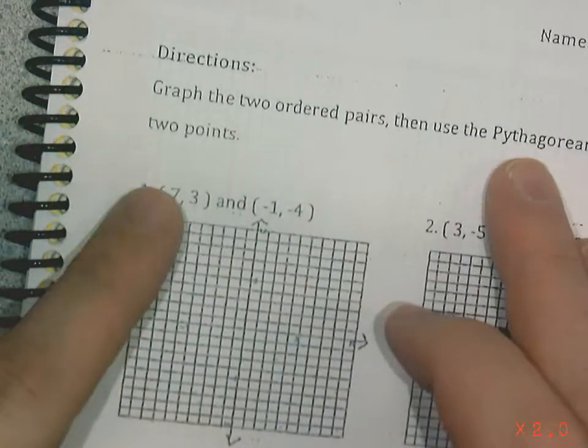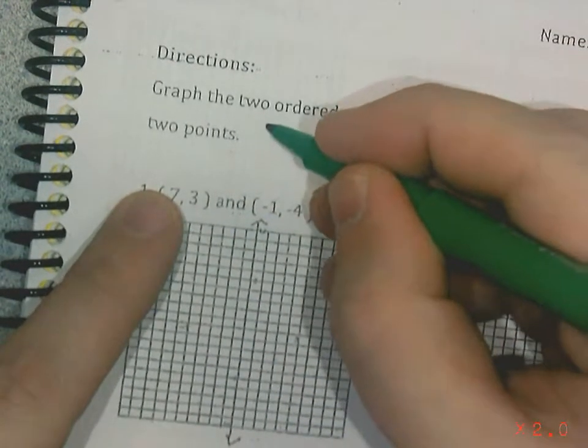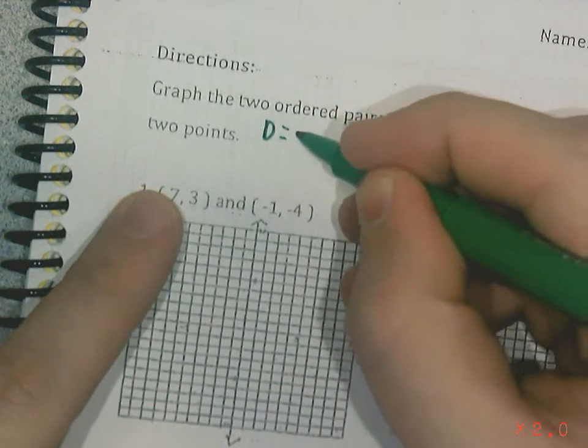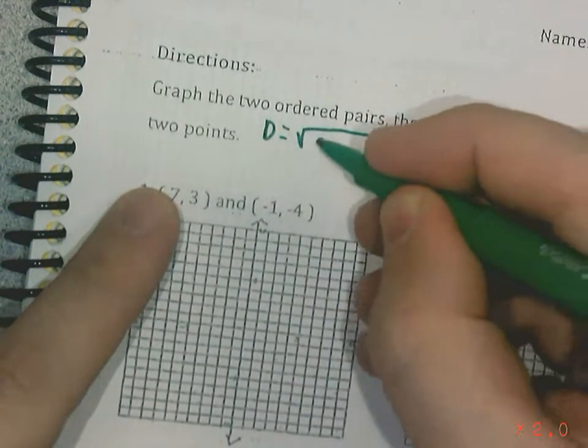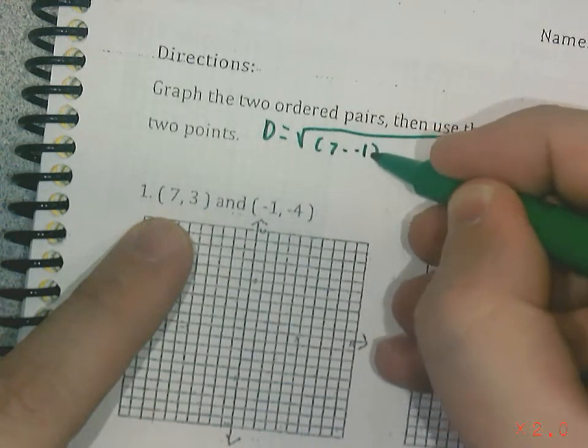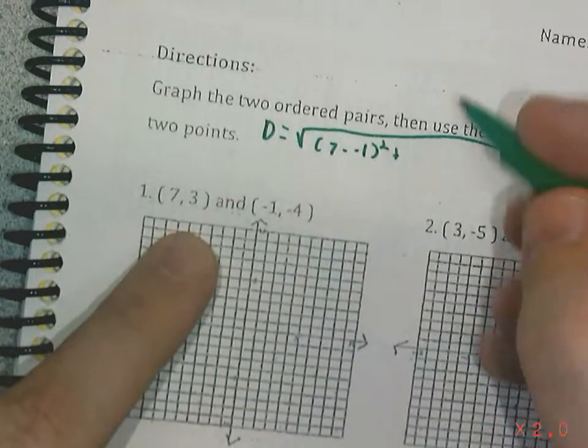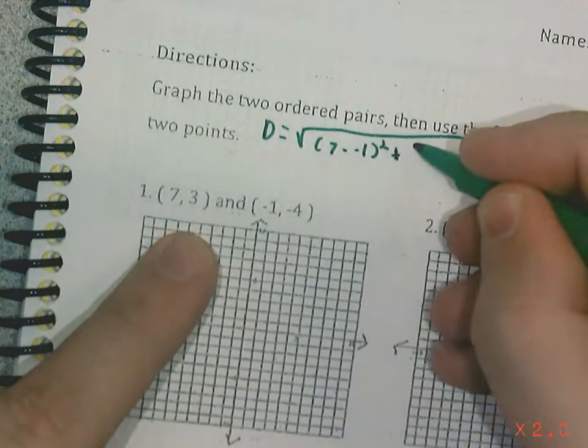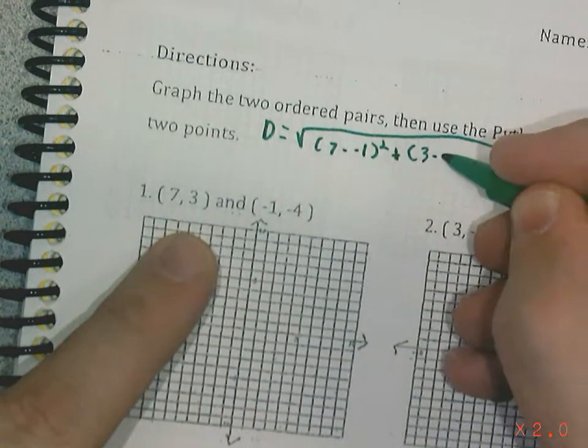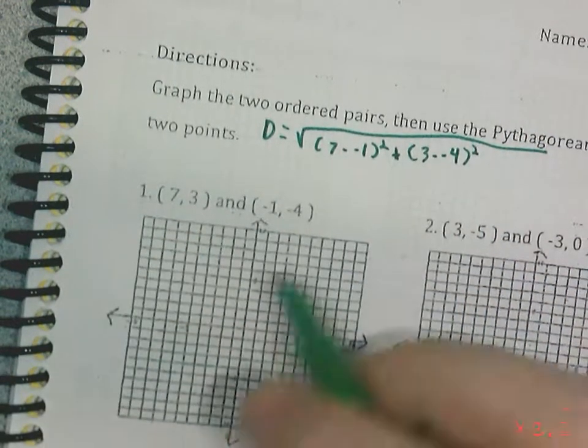So my two x coordinates are seven and negative one, right? So if I were to use my distance formula, the distance equals square root of seven minus a negative one squared, and then my two y coordinates are three and negative four. So plus three minus a negative four squared, and that's my distance formula.